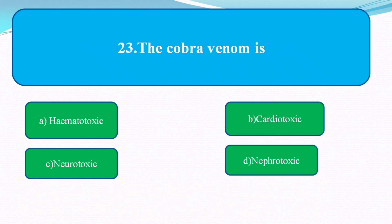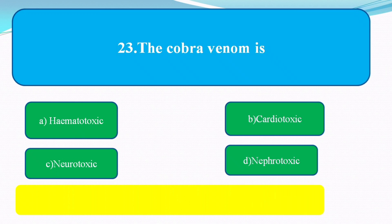The cobra venom is? The options are: amytotoxic, cardiotoxic, neurotoxic, nephrotoxic. The answer is neurotoxic.